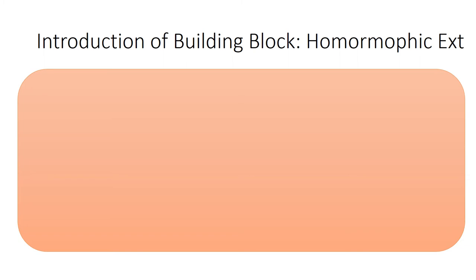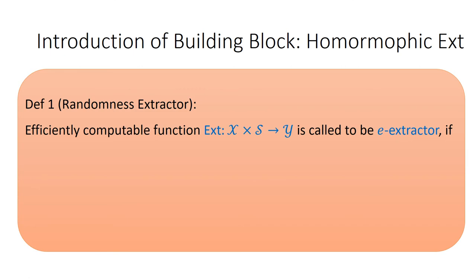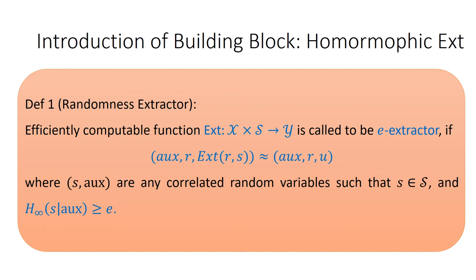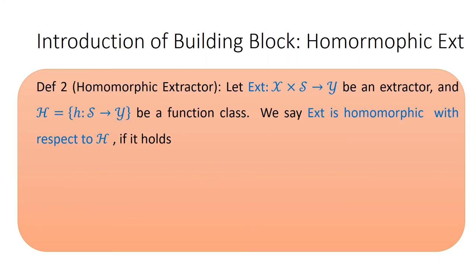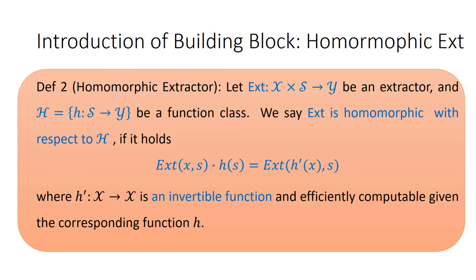Besides the weak HPS, we also need to introduce the homomorphic extractor as a building block. First, we review the definition of a plain randomness extractor. Generally, an efficiently computable function Ext: X × S → Y is called an ε-extractor if the output of Ext(R) is statistically close to uniform, where the source should have enough conditional min-entropy. A homomorphic extractor with respect to a function class H means that for any function h in class H, it holds that Ext(x, s) · H(s) = Ext(H'(x), s), where H' is an invertible function efficiently computable given the corresponding function H.